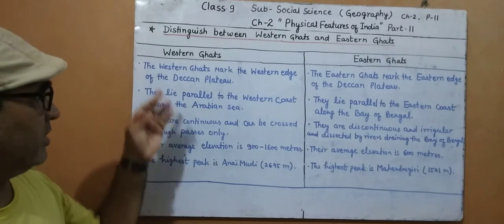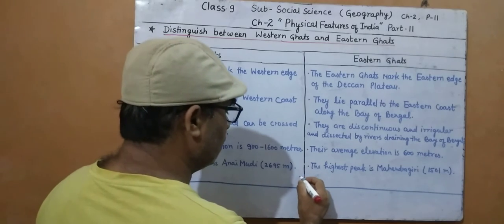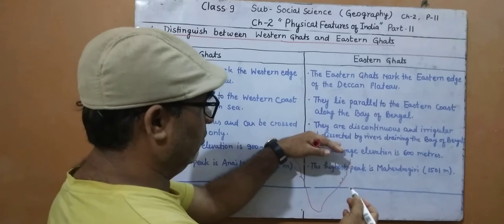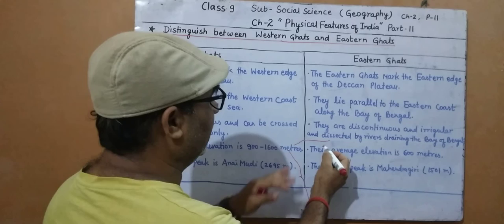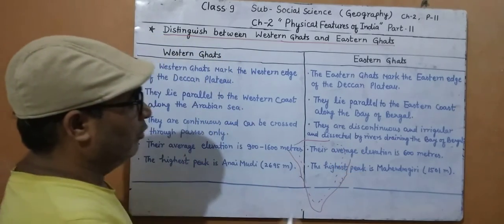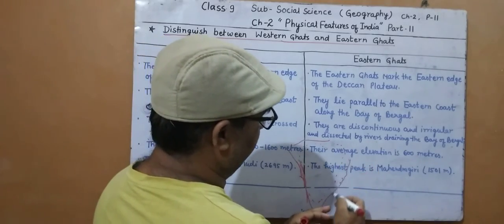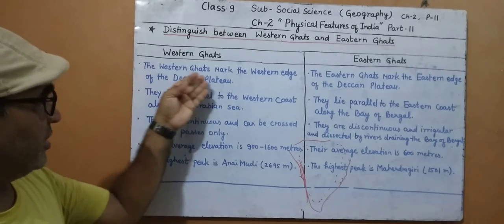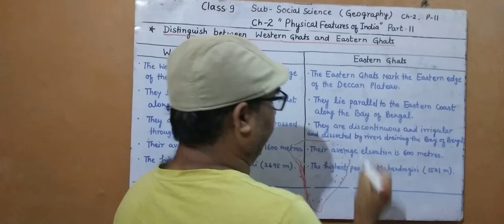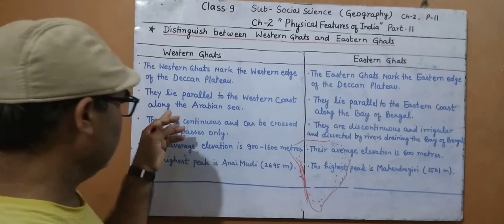Students, you know the Western Ghats? The Western Ghats mark the western edge of the Deccan Plateau. They lie parallel to the western coast along the Arabian Sea.